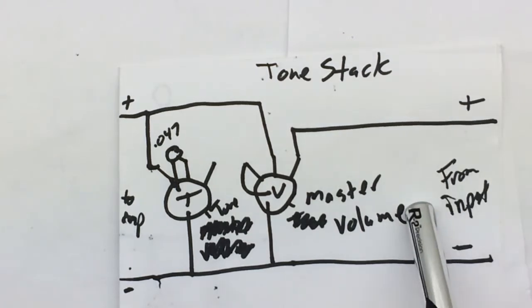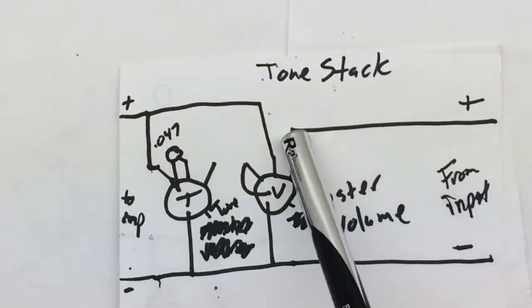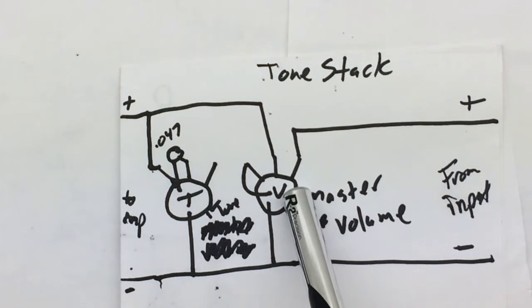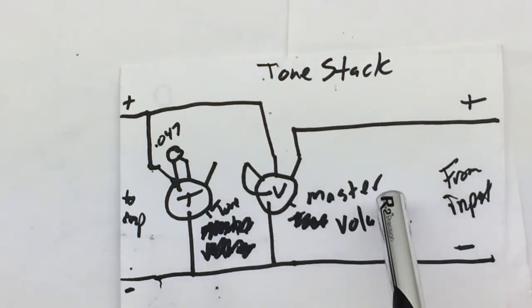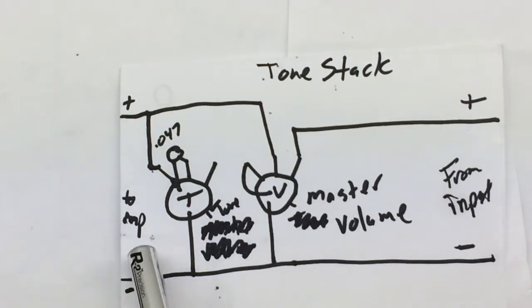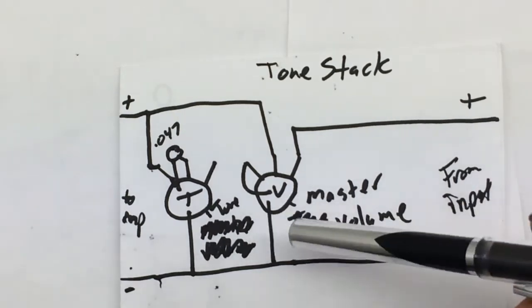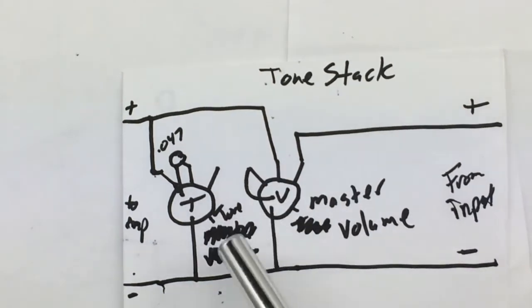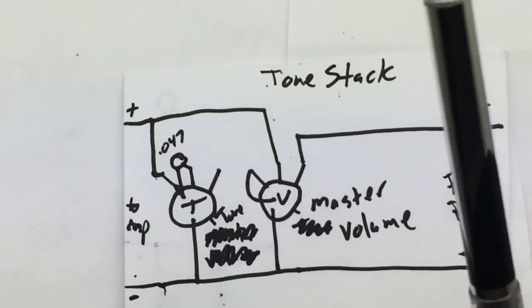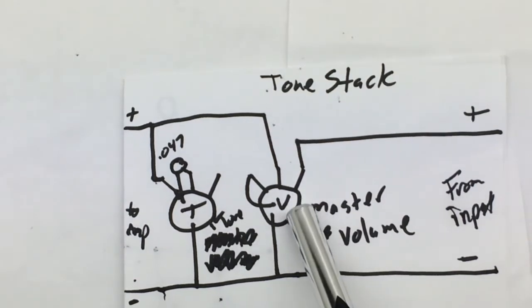Basically, we're going to bring an input signal in and run it through a volume control to raise or lower the amount that's going to the amp. Sometimes you don't want to be loud, sometimes you want to scream. That's what the volume control is for. This will end up being the master volume control for the Leslie that we're building.